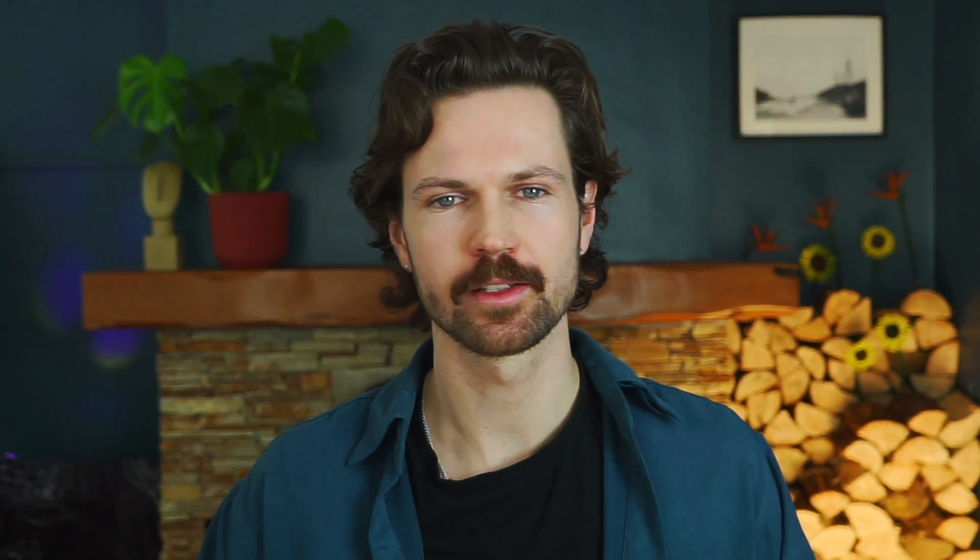We start with a step-by-step walkthrough of PDPs. To explain the method, we'll use a dataset with details on the sales of 1,000 second-hand cars. It contains five features, including the car's age at the time of the sale and the car type, that is if it is a normal or classic car. The goal is to predict the price using these features. You can find a link to the dataset in the description.